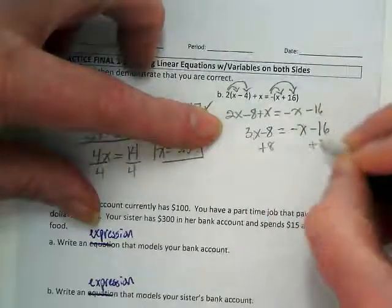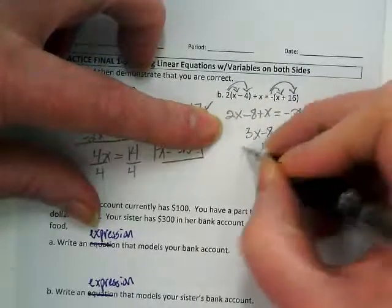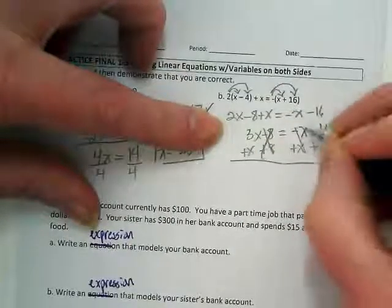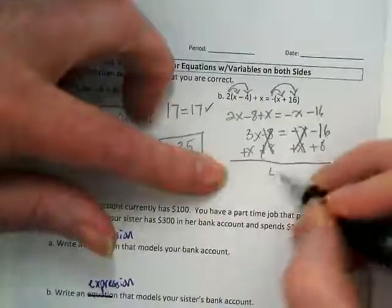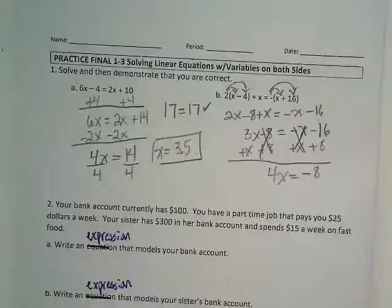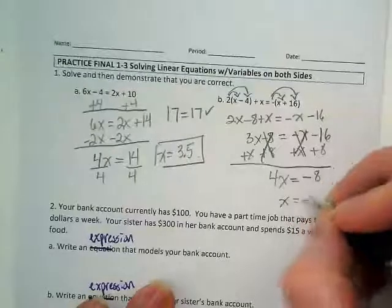I'm going to add this 8 to both sides and I'm going to take a shortcut and do this plus x to both sides at the same time. This will zero out and this will zero out, giving me 4x is equal to negative 8. I divide both sides by 4 and I get x is equal to negative 2.